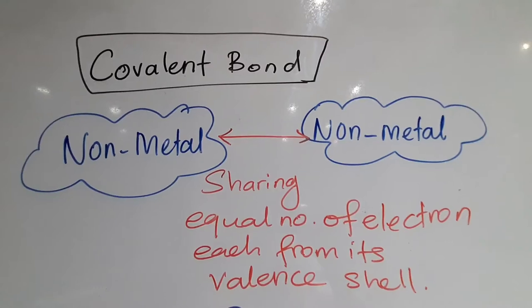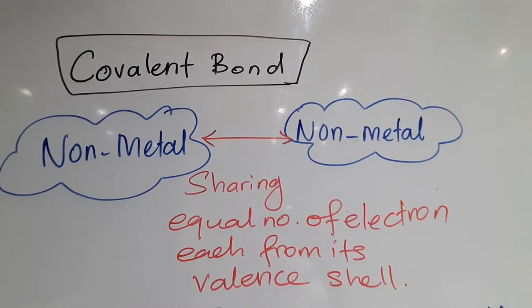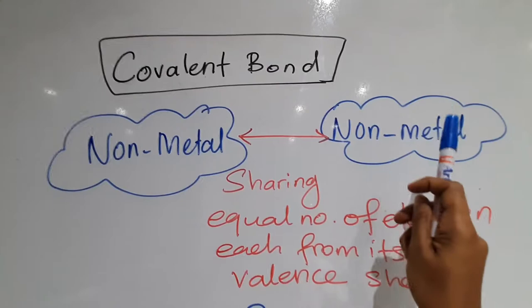Good morning students. Today we're going to learn about covalent bonds. A covalent bond is formed through the sharing of electrons between non-metal and non-metal elements. As you can see here, a non-metal will share its electrons with another non-metal element.